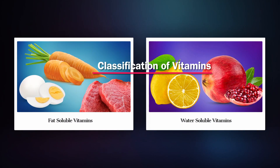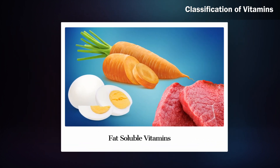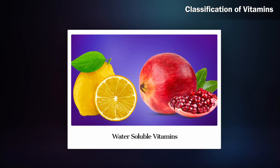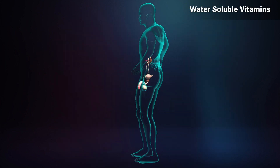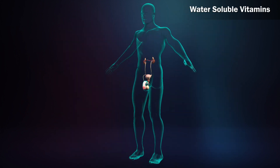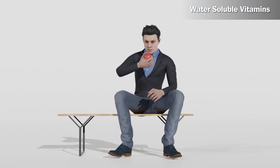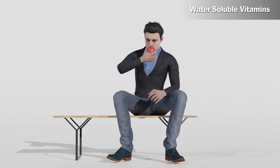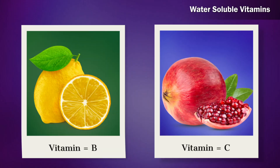Classification of vitamins: vitamins are classified into two groups depending upon their solubility — fat-soluble vitamins and water-soluble vitamins. Water-soluble vitamins cannot be stored in our body; they are excreted through urine and therefore must be replenished continuously. Vitamins B and C are water-soluble.